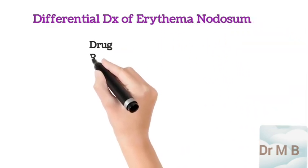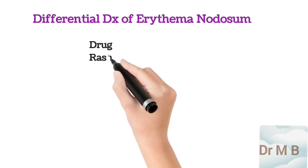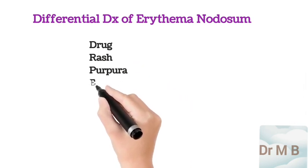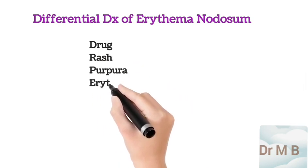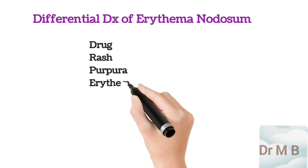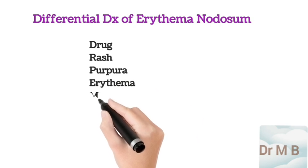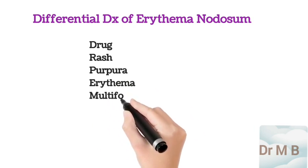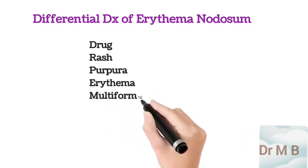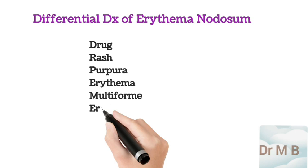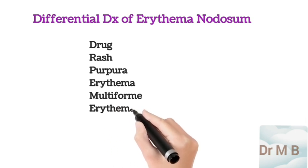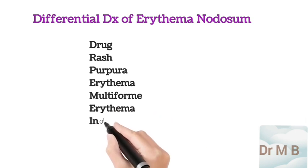You should know the common differential diagnoses of erythema nodosum. These are drug rash, purpura, erythema multiforme, and erythema induratum.